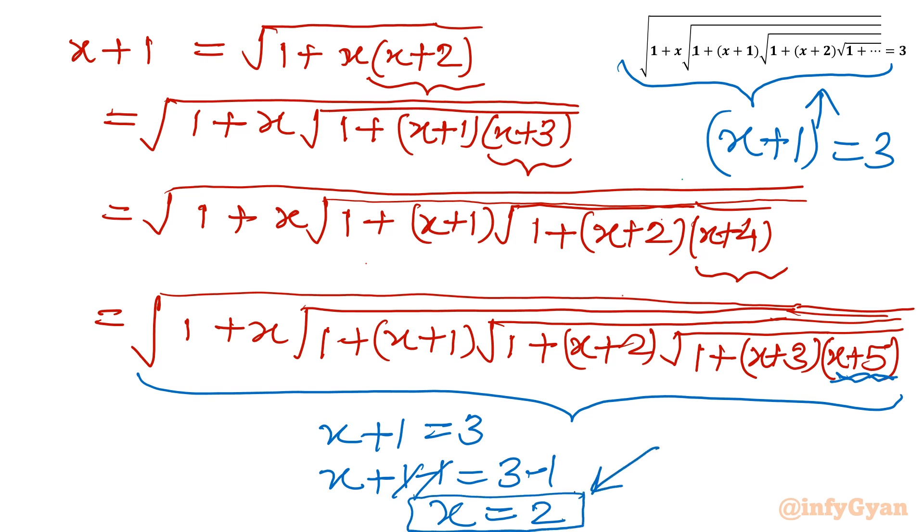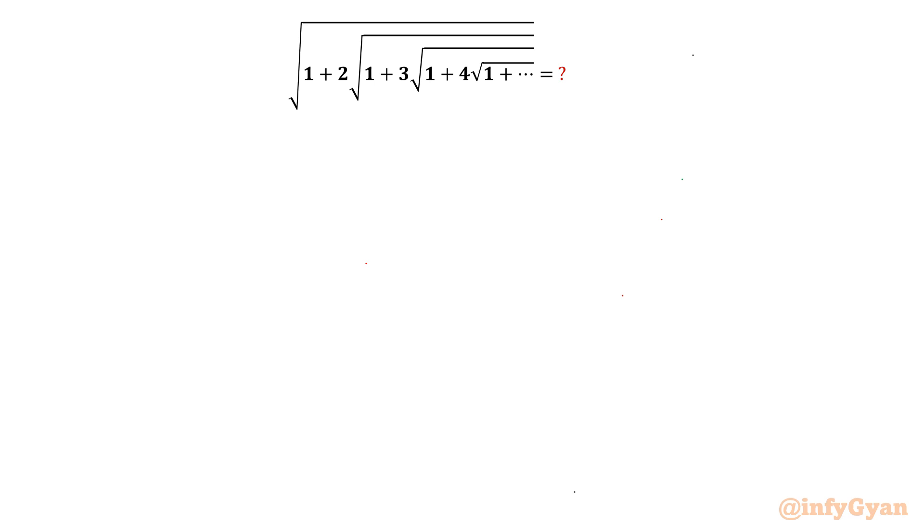Let us consider one more case. See here you won't get any x value. You have to simplify. How you will begin here? So we will consider one number - it is 3. 3 can be written as square root of 9. Anytime we can write. Now 9 is square root of 1 plus 8.